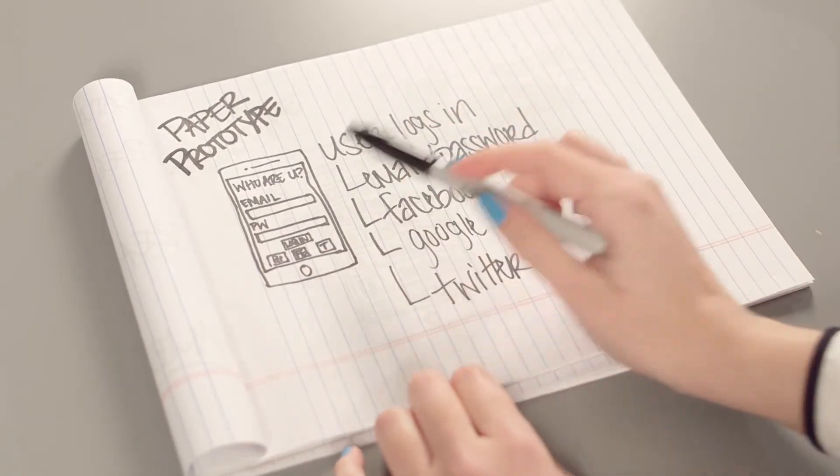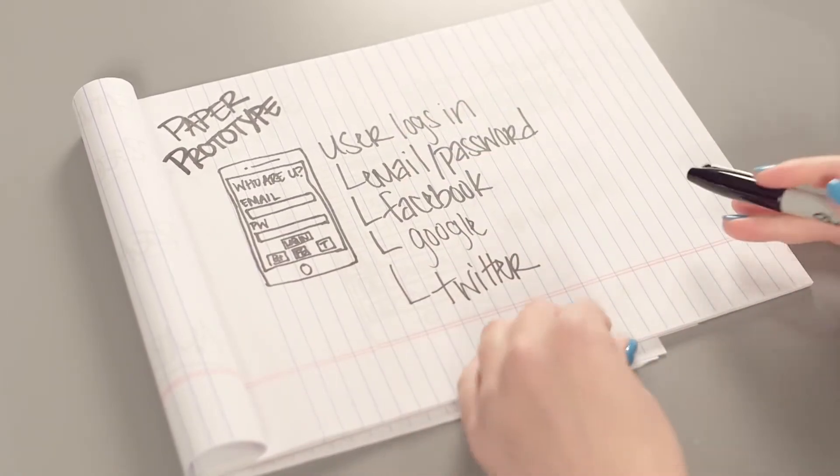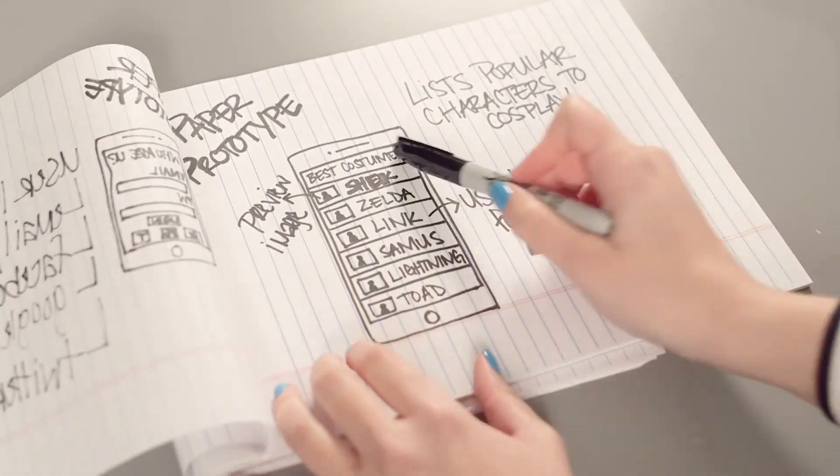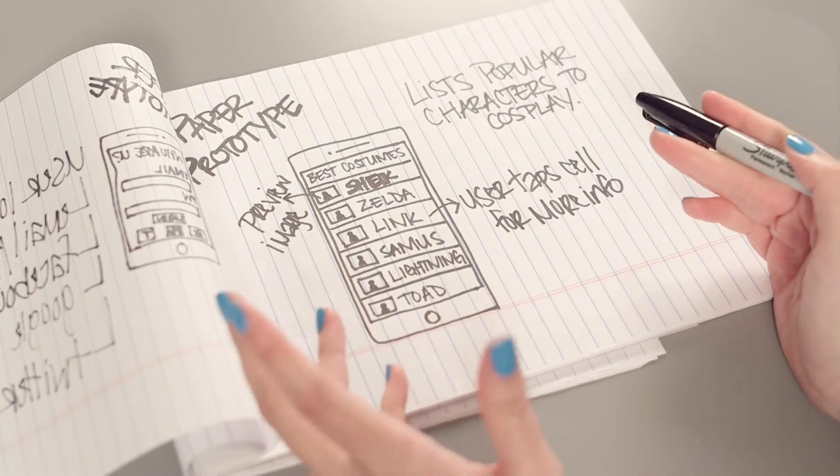Will they start with a login screen and then move to a custom set of user information? Or perhaps they'll start with a list of some kind, and then they can log in later to save it.